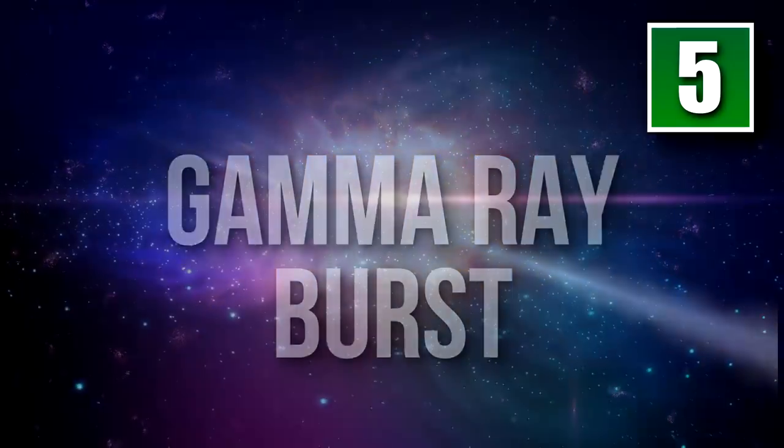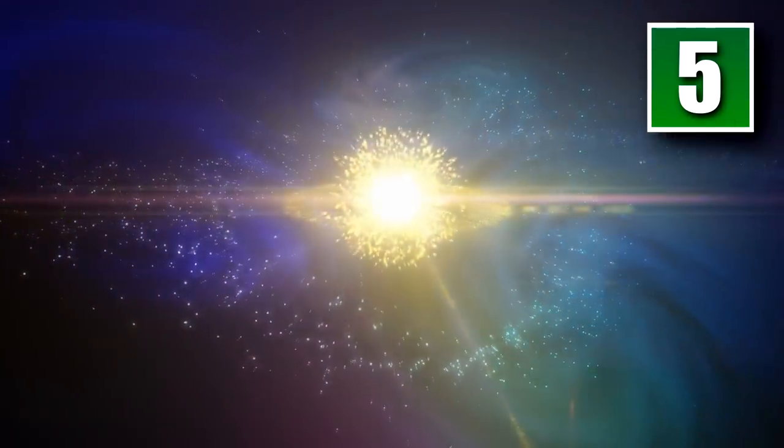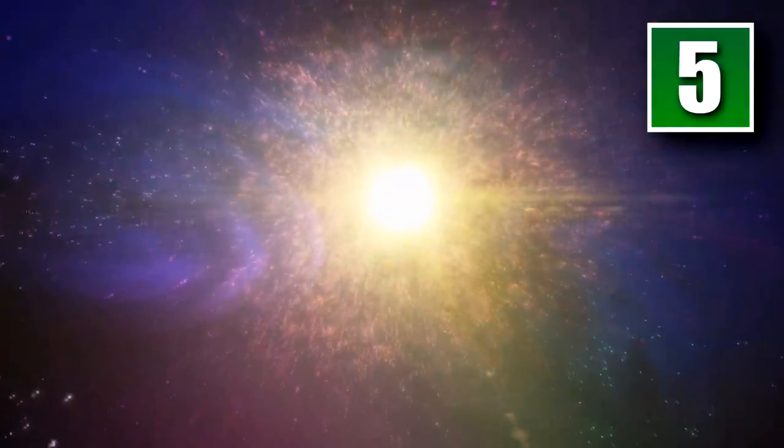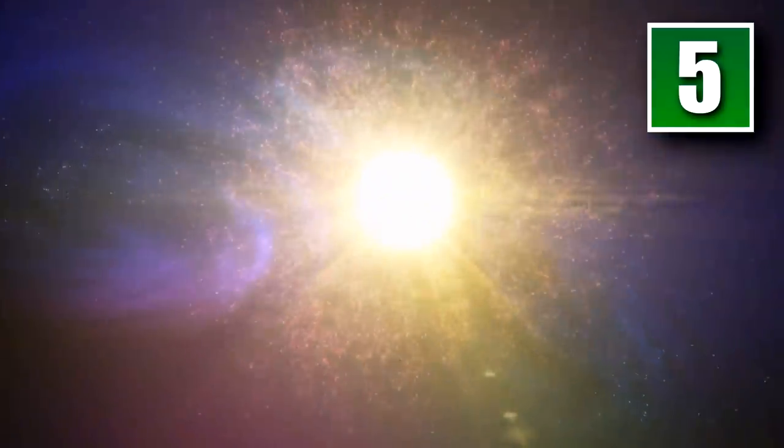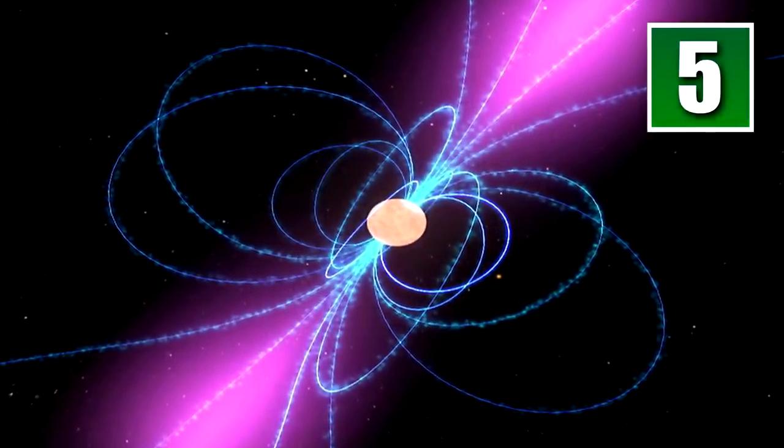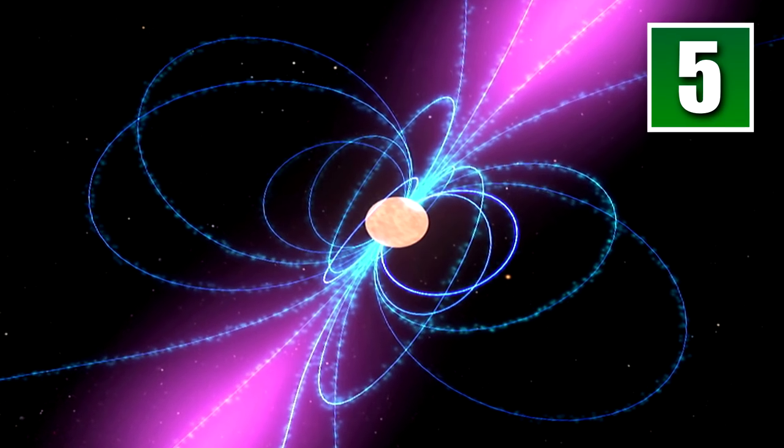Gamma ray bursts occur when a massive star goes supernova. In a few cataclysmic seconds, a supernova releases more energy than our sun will produce during its entire life. When a star goes supernova, this energy is channeled through two magnetic poles. If one of these magnetic poles was close enough to Earth and was facing in the correct direction, our planet could be hit with a massive gamma ray burst.